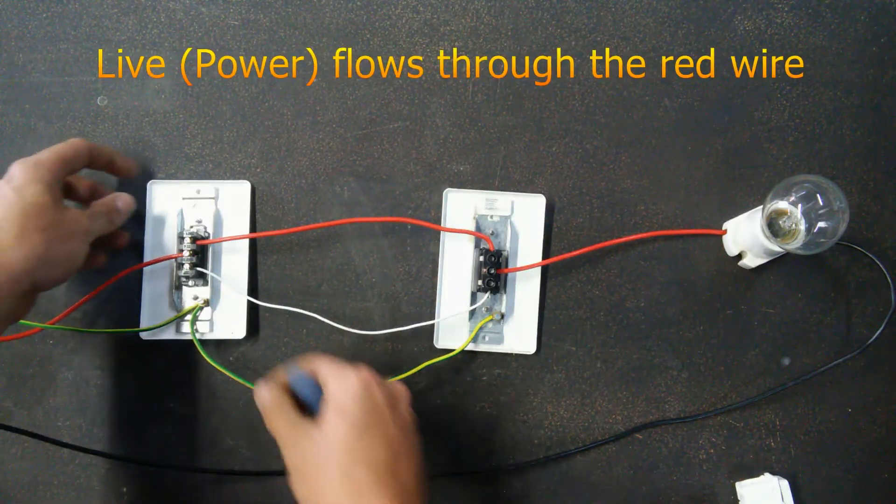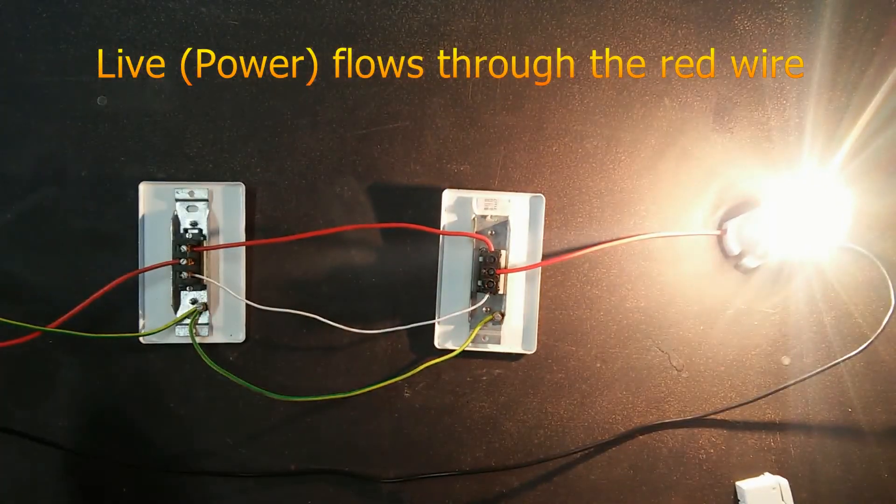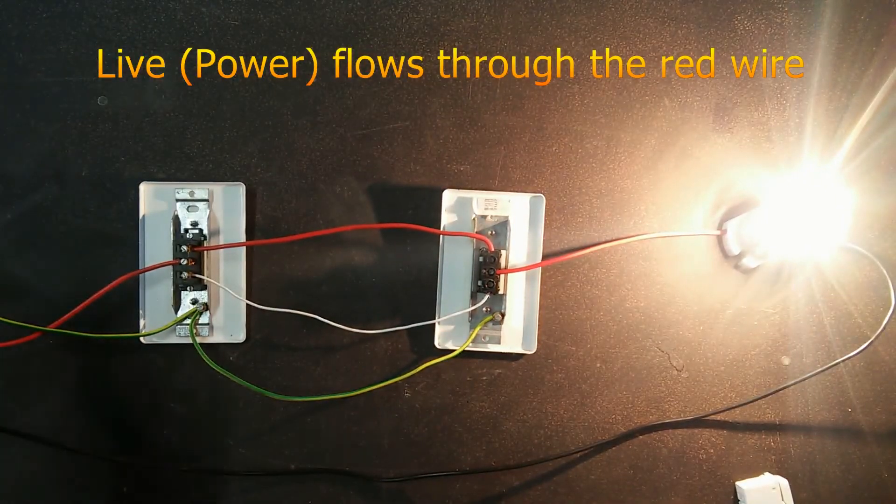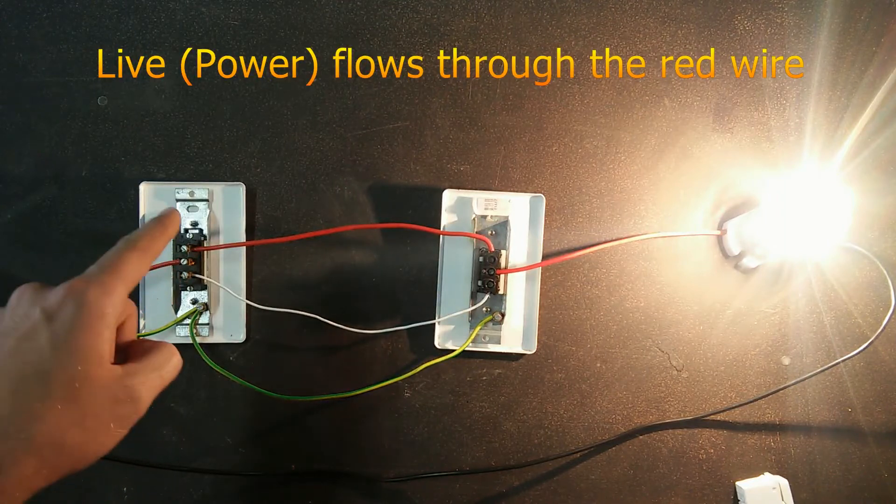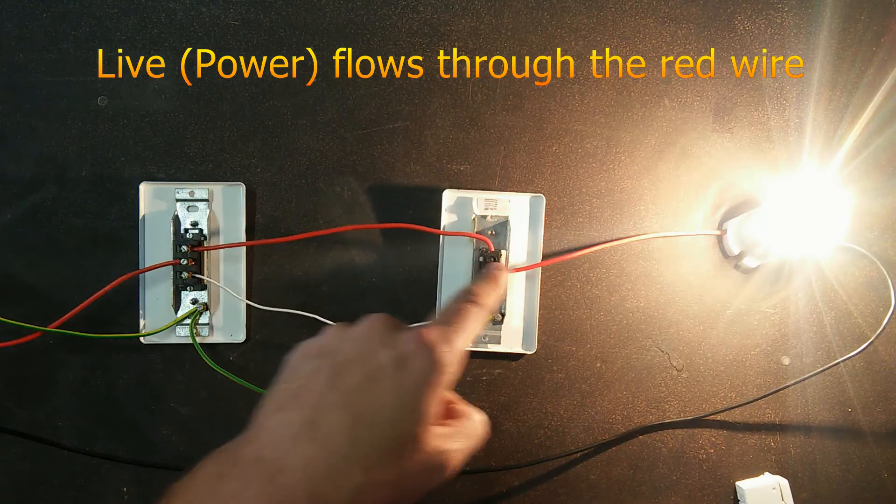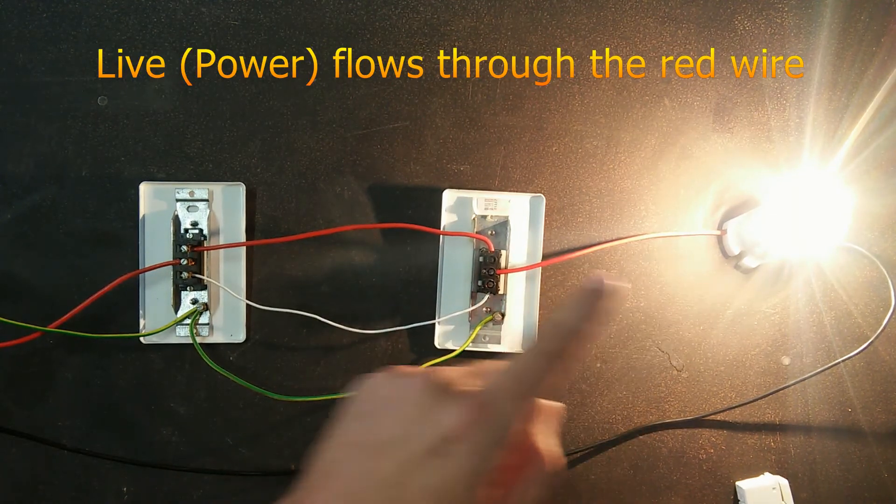So when I switch on one switch, the light comes on and the live is actually traveling from the red wire to the center. Then I switch it to that red wire and it jumps back to the center. As you can see, where the red wire is, that's where the live is.